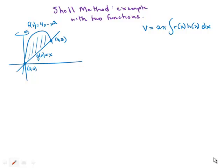In this video, I'll show an example of using the shell method when there are two functions involved. So suppose we have a region bound by f of x equals 4x minus x squared and g equals x.